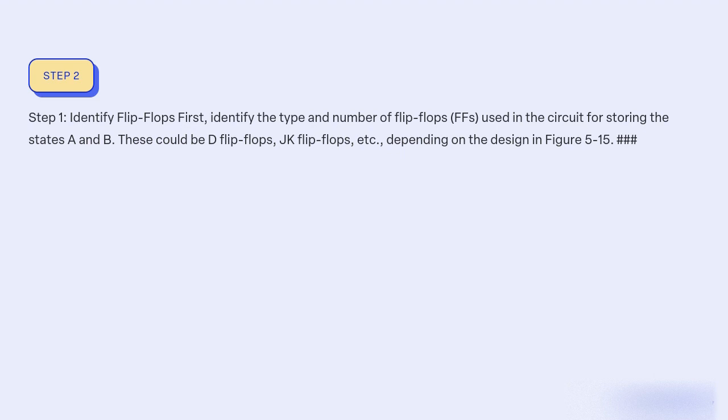Step 1: Identify flip-flops. First, identify the type and number of flip-flops used in the circuit for storing the states A and B. These could be D flip-flops, JK flip-flops, etc., depending on the design in figure 5-15.